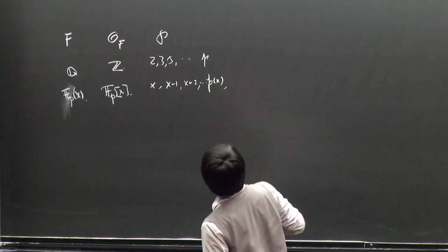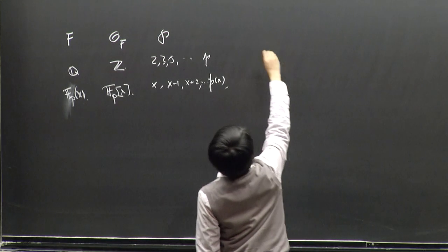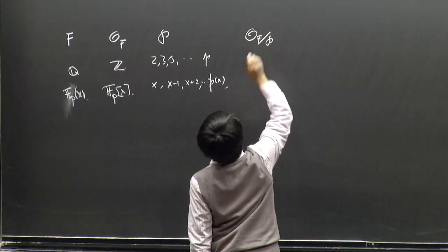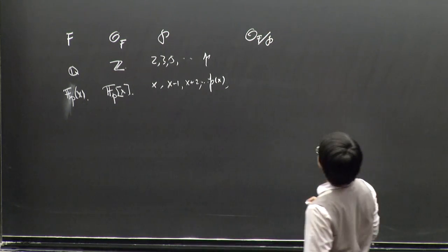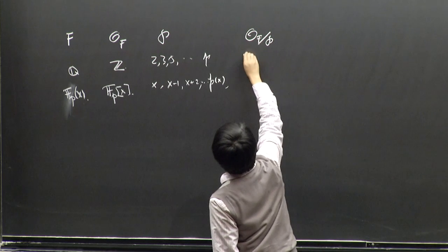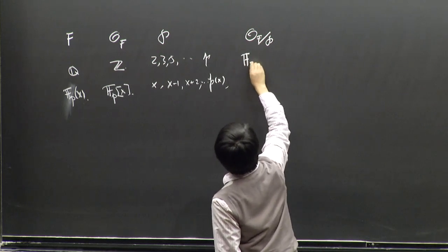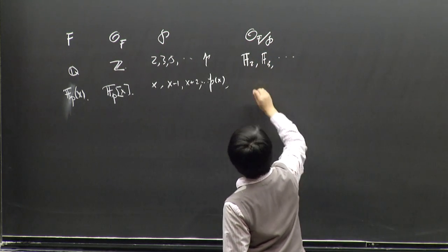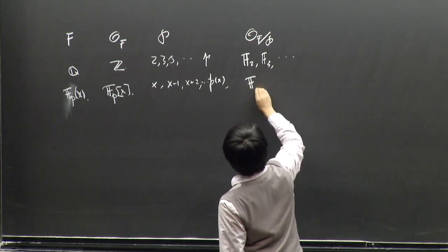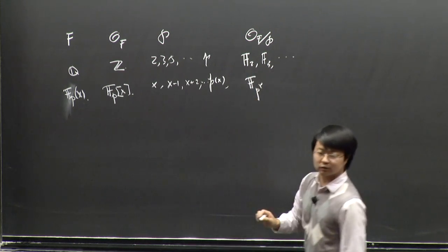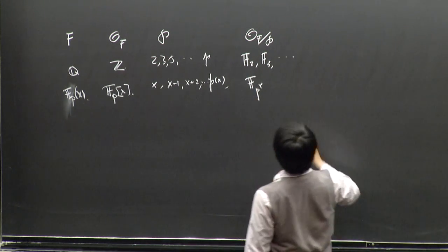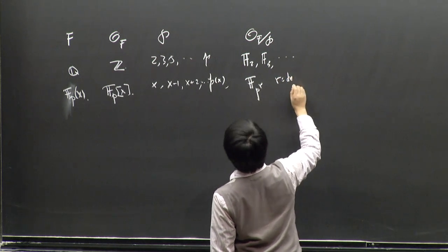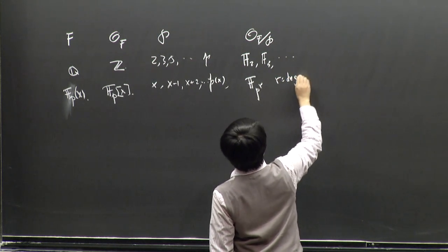We have residue fields 𝔽 mod p — some finite fields like 𝔽_2, 𝔽_3 — and here it's always 𝔽_p^r, a field of characteristic p. Here r is basically the degree of the polynomial.